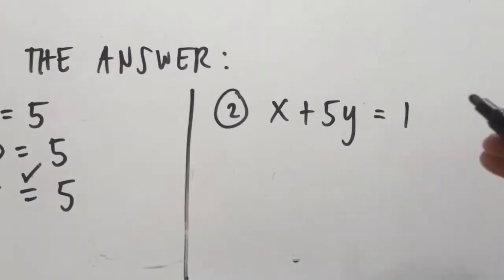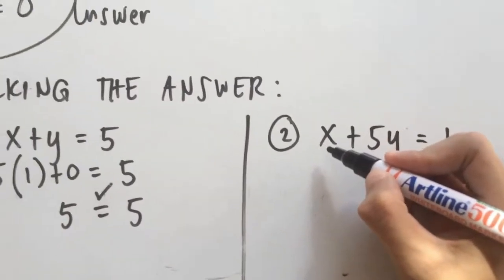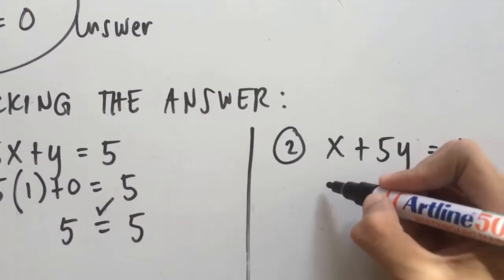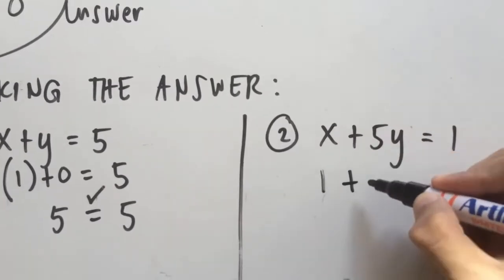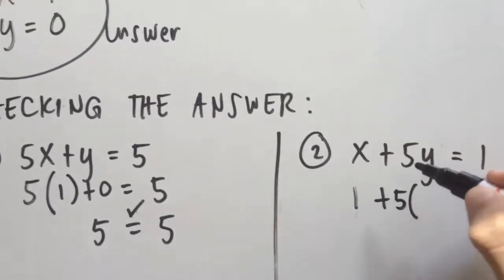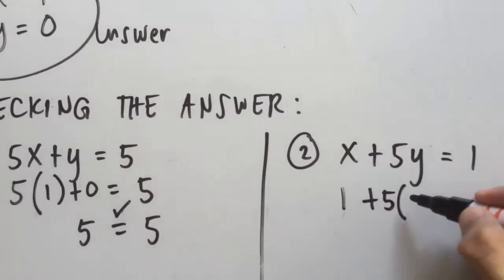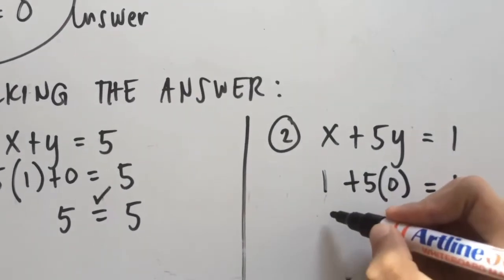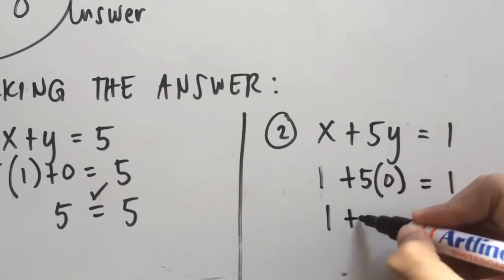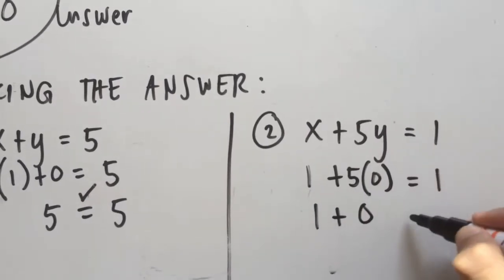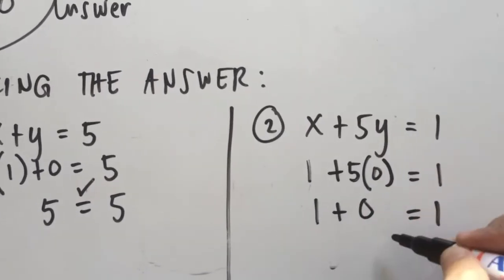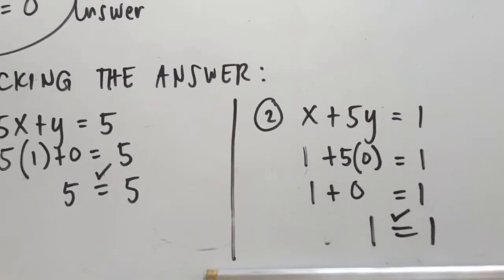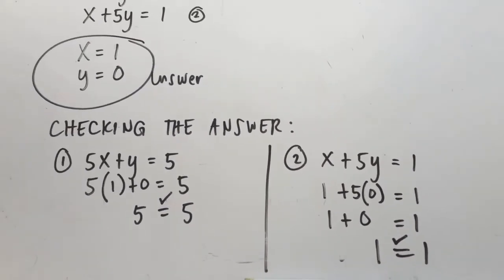For equation 2, we substitute the values: x plus 5y equals 1 becomes 1 plus 5 times 0, which equals 1 plus 0, which equals 1. So 1 equals 1 — it's verified and correct. Thank you for watching.